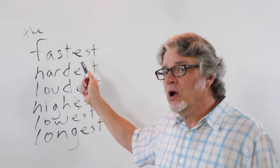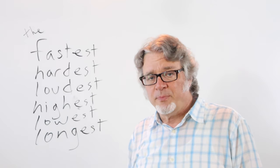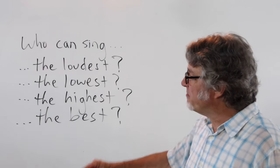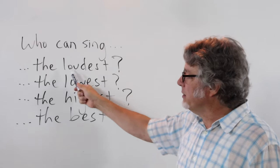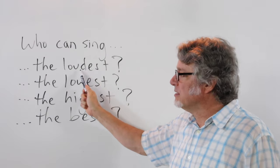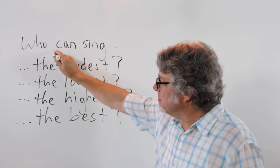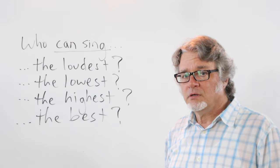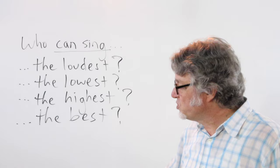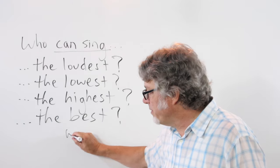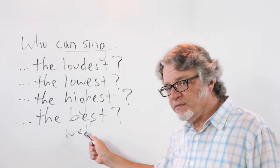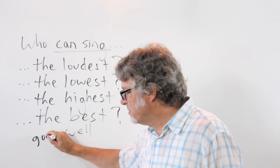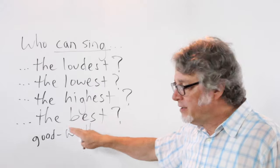The word 'the' is especially common in questions. For a group of people who can sing, you might ask: who can sing the loudest? Who can sing the lowest? Who can sing the highest? Who can sing the best? The superlative adverb 'best' is used for the adverb 'well.' When 'well' is in the superlative form it becomes 'best.' Remember that 'well' is related to the adjective 'good' — here's the adjective, here's the adverb.